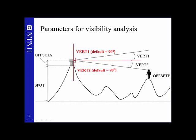Offset B is what I often refer to as the eye height — the height above the elevation of a person situated in the landscape at which their eyes are located. We can also set vertical angle one and vertical angle two, but these we will leave as default.